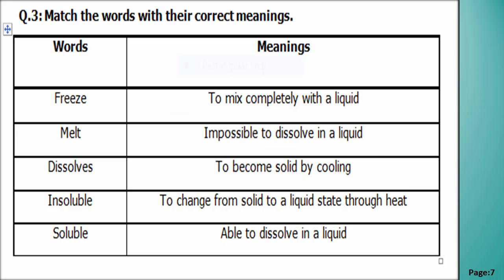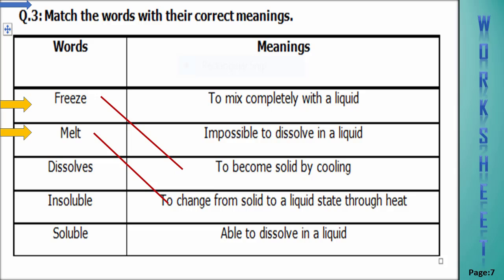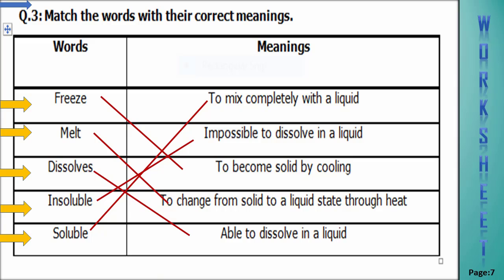Now students we will do question number three — match the words with the correct meaning. Freeze means to become solid by cooling. Melt means to change from solid to liquid through heat. Dissolves means to mix completely with a liquid. Insoluble means impossible to dissolve in a liquid. Soluble means to mix completely with a liquid. I hope you will complete your task diligently.